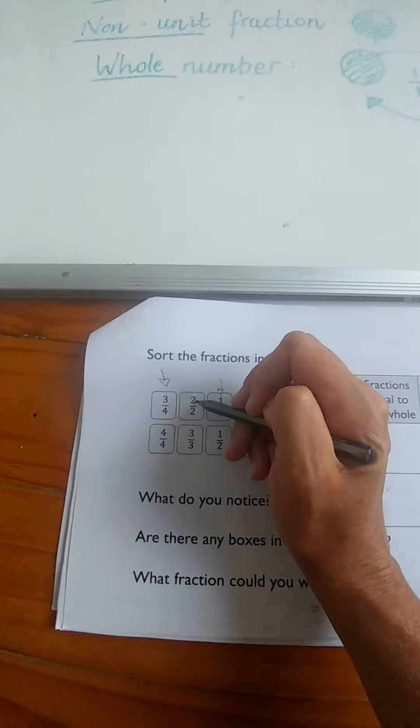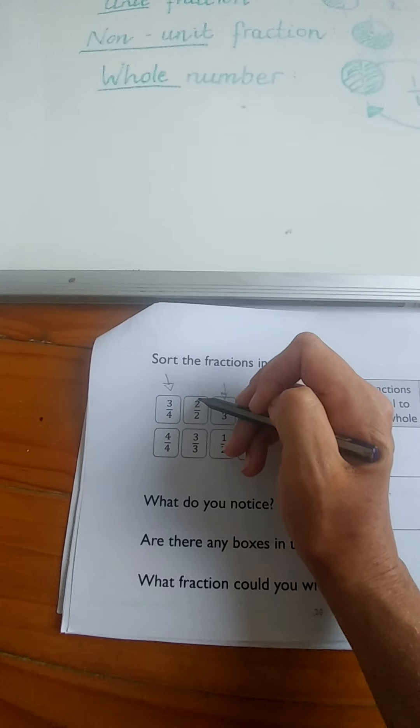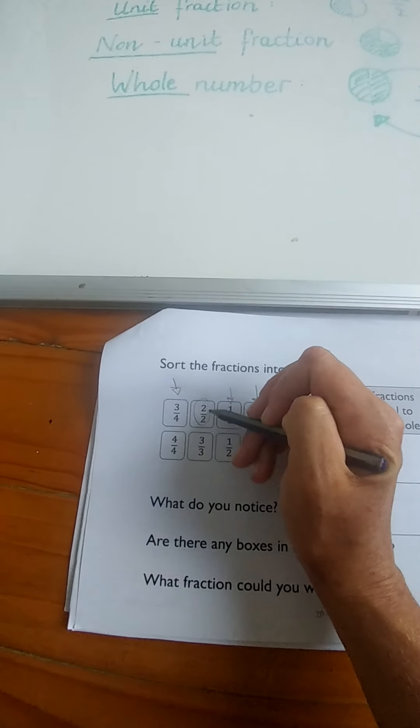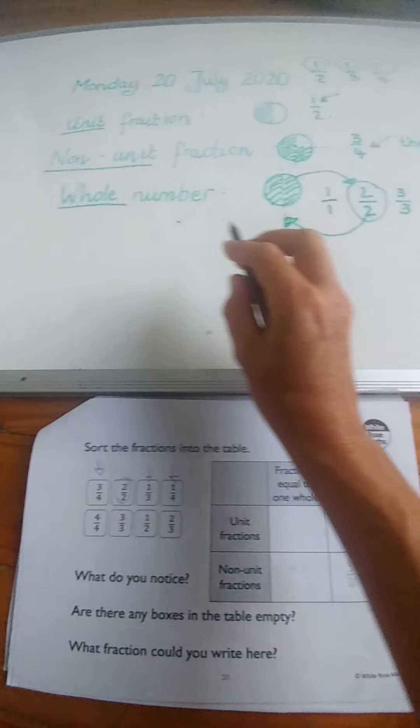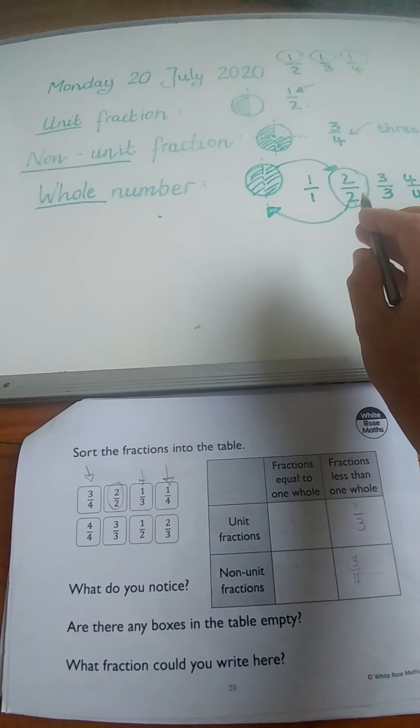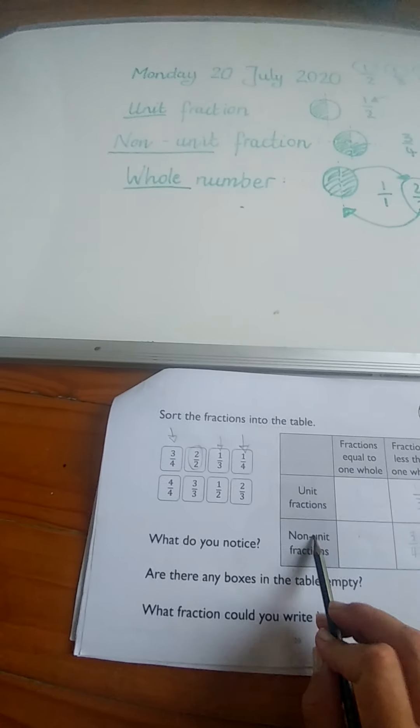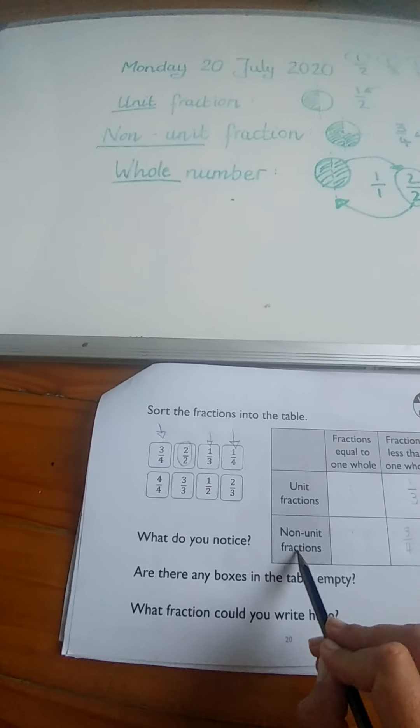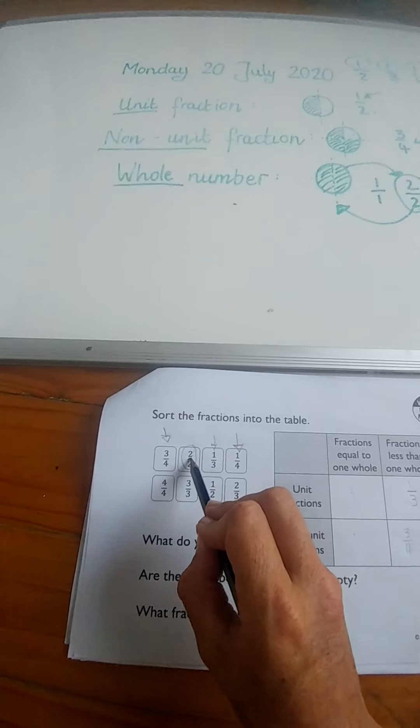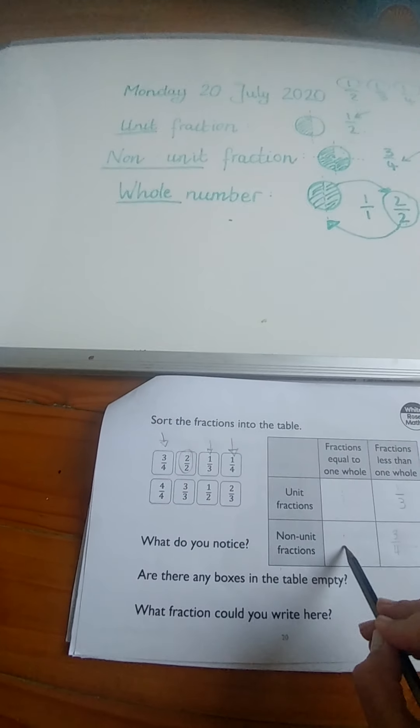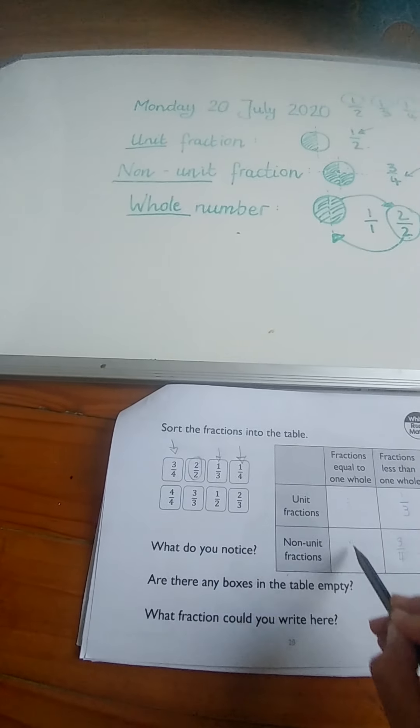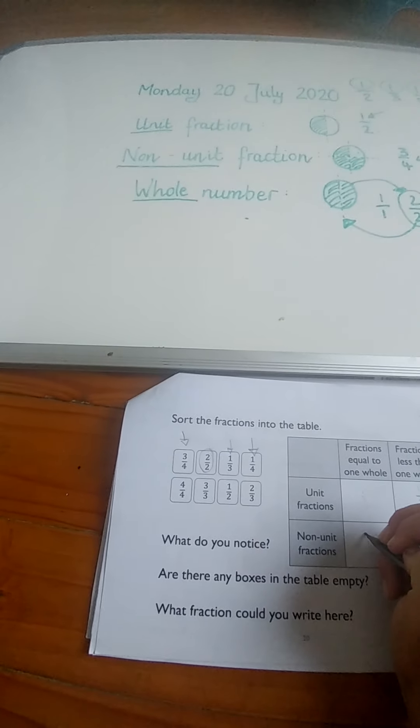All right, this is also not got a one at the top so it could also be a non-unit fraction, but it's a whole number, remember, because it's over itself. So it's going to go somewhere different. We know it's a non-unit fraction because it's not got a one at the top. And is it equal to one whole? Yes it is, because it's two over two.